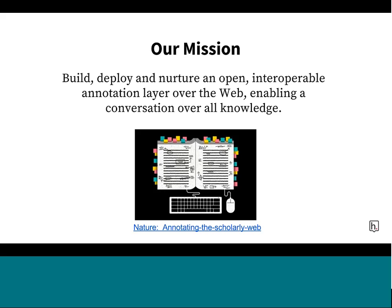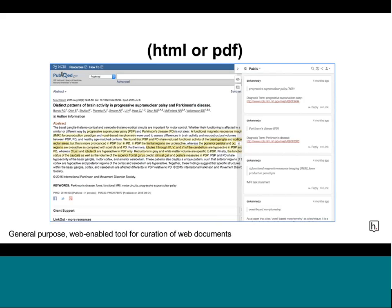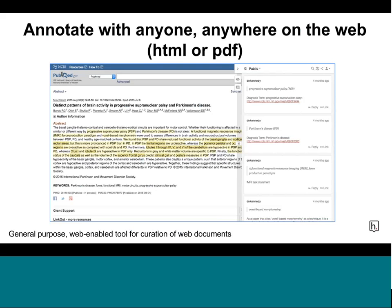Something that would decrease the fragmentation we currently have rather than increase it. Hypothesis is currently free to use and install. Hypothesis does host your annotations currently, but your annotations belong to you. They're covered under open licenses, and this is really meant to be an enabling technology that can be deployed and developed to serve science and scholarship in general.